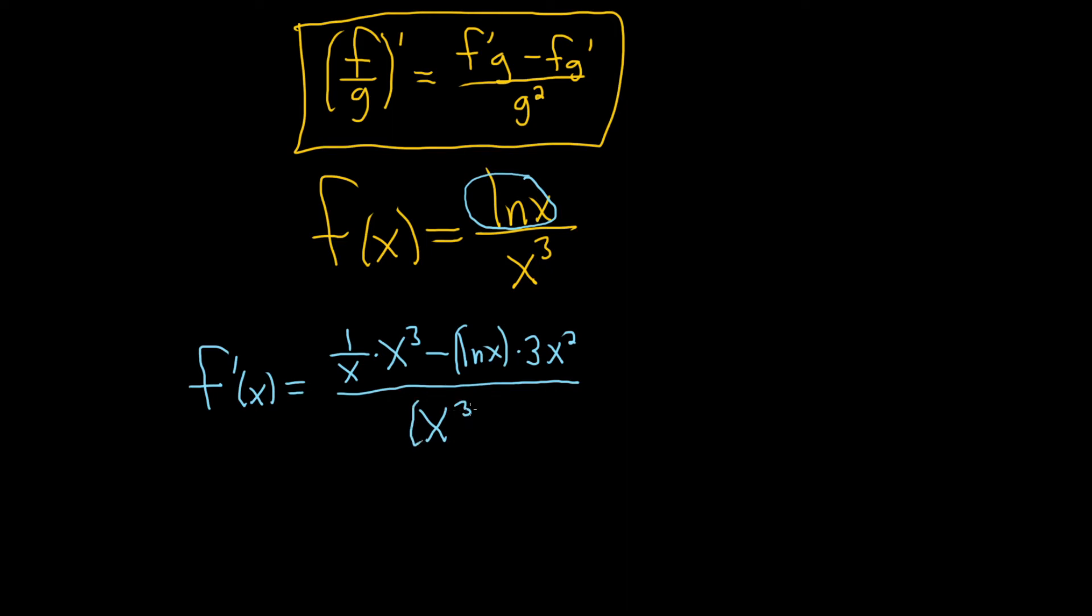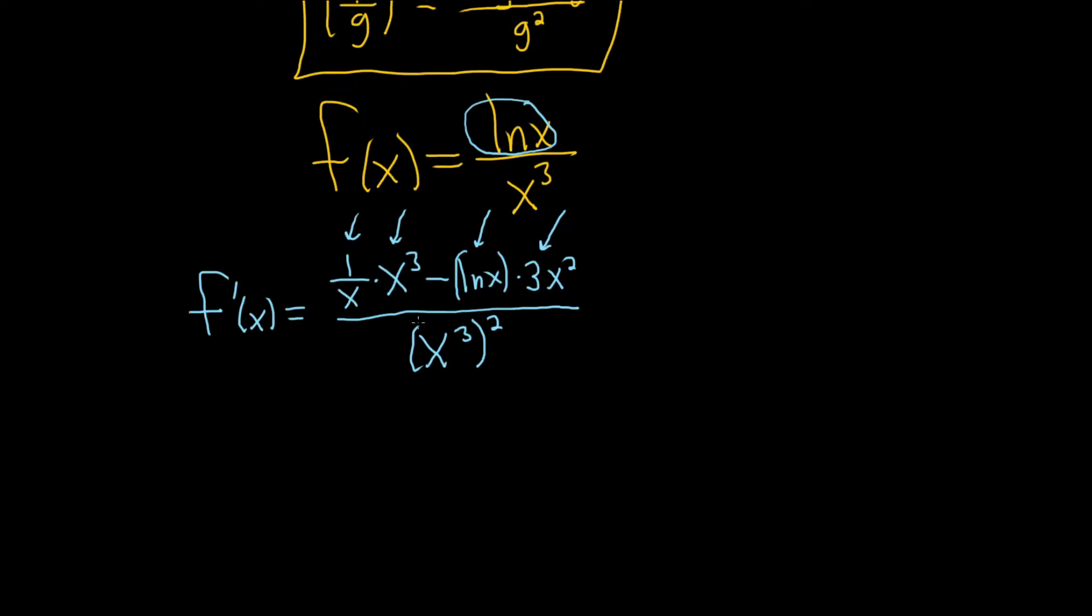Over the bottom one squared. So x cubed. And this whole thing here is squared. Let's just check that. So it's the derivative of the top times the bottom minus the top times the derivative of the bottom. Yep, everything looks okay.